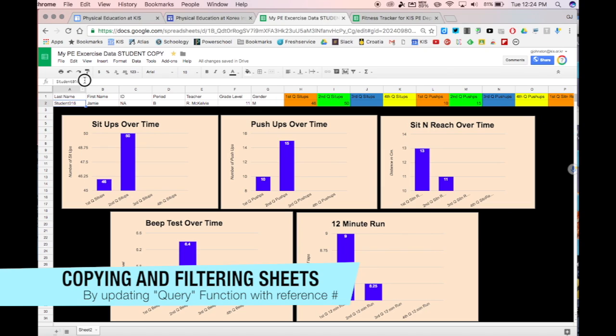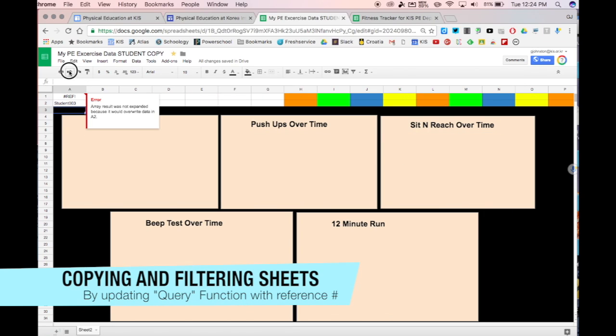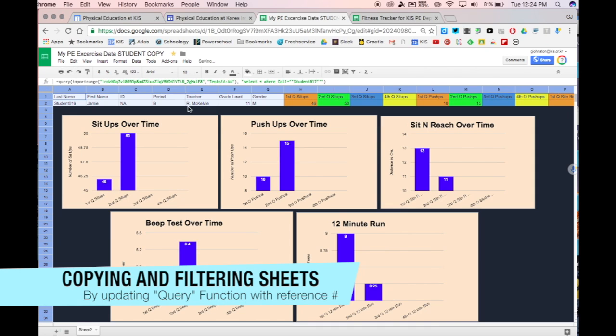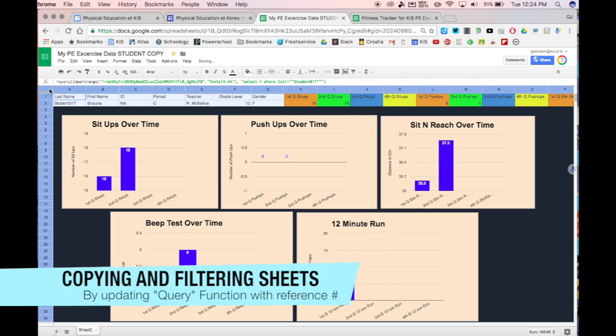Now student number three, you might think you put it in here, but actually you don't. If you click here and you put student point zero zero three, what happens is it screws up the spreadsheet. This is not how the spreadsheet is pulling in data, so I'm just going to go back and change that.